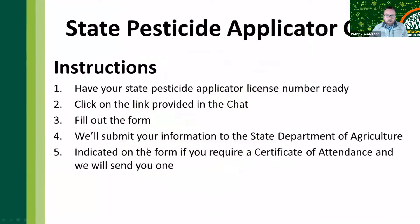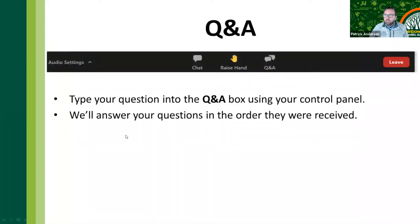Before we get to questions, I'm going to put a link into the chat — you'll want to click on that link to get your state pesticide credits. We are approved for South Carolina credits and are working on other states. It will take you to a Google form — just follow those instructions and fill them out completely. ISA CEUs should go into the Q&A. If your certification requires proof of attendance, let us know and we'll send that to you directly. With that, we'll turn to questions and answers for the next six minutes or so.